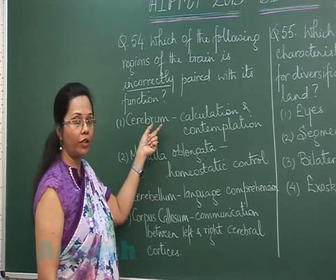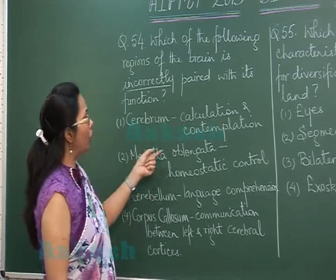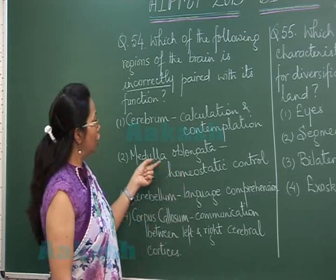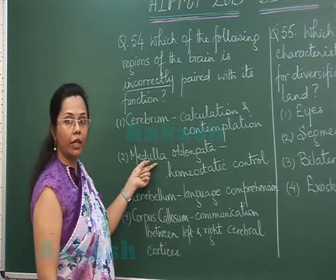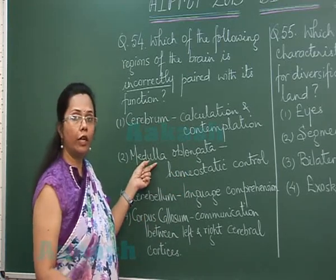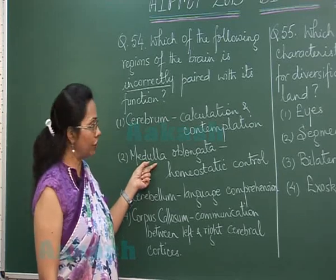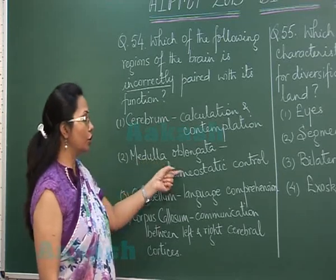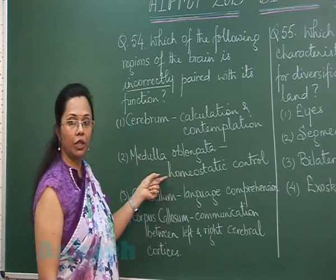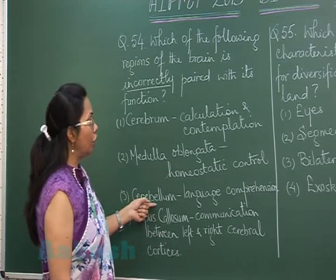Medulla oblongata — homeostatic control. The medulla oblongata is the center of all involuntary functions and it controls a number of reflexes, so it certainly has a role in homeostatic control as well.